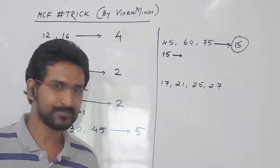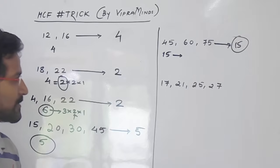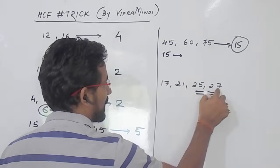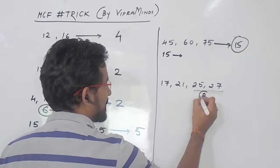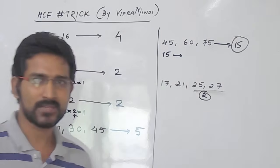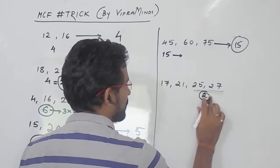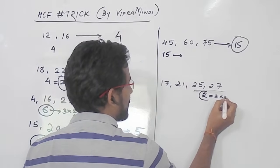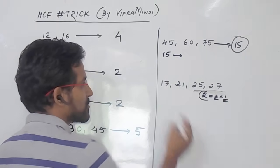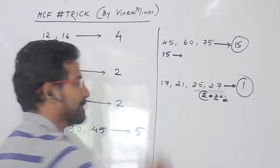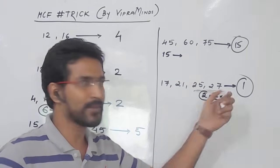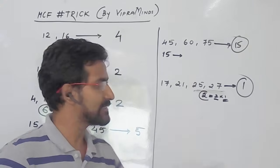Now we will see the next one: 17, 21, 25 and 27. The least difference here will be nothing but between 25 and 27, that is 2. Now whether 2 is the divisor of 17, 21, 25, 27? No, it is not a divisor of any of these numbers. The factors of 2 are 2 × 1. Since 2 is not a divisor, the remaining factor is nothing but 1, which is the divisor of all numbers. So the HCF will be nothing but 1.